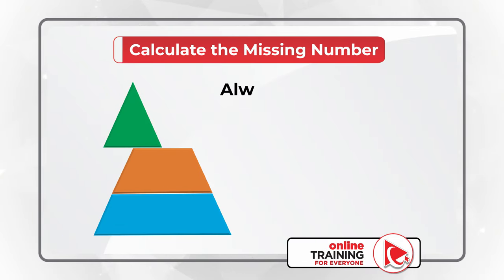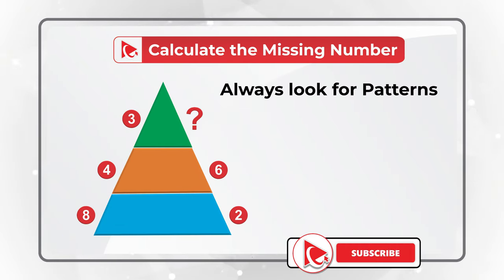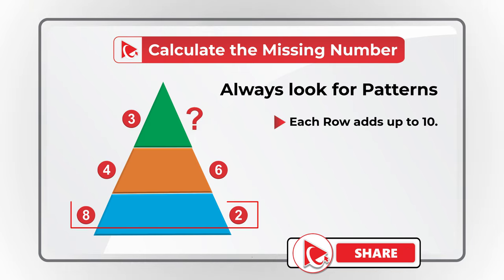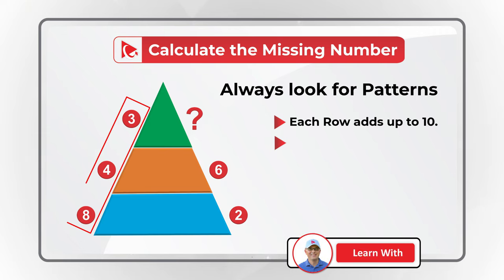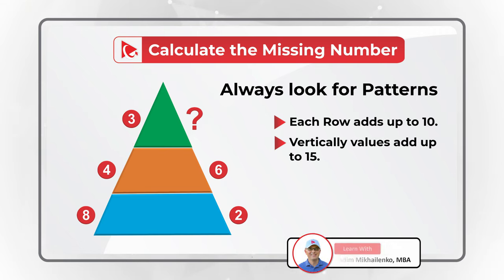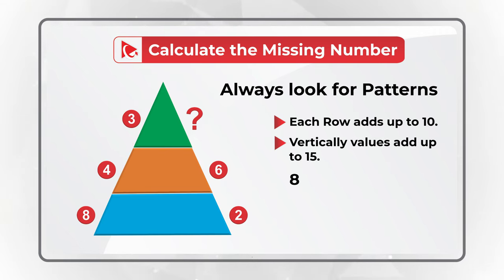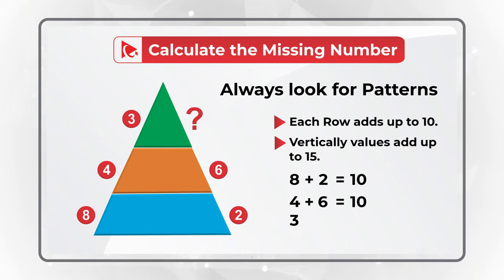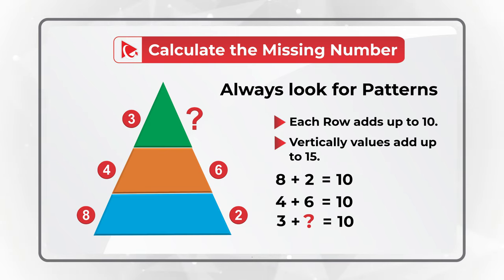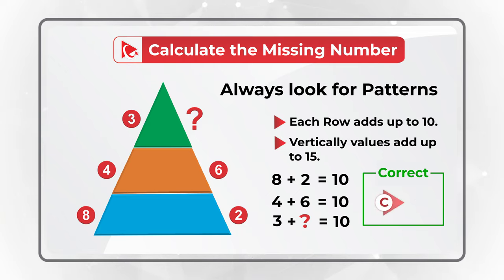The fundamentals are solid: you need to always look for patterns in these types of questions. There are actually two patterns here. The first pattern is that each row adds up to 10, and vertically values add up to 15. For example, 8 plus 2 equals 10, 4 plus 6 equals 10, and 3 plus the missing number also equals 10. So the correct answer here is Choice C, 7.